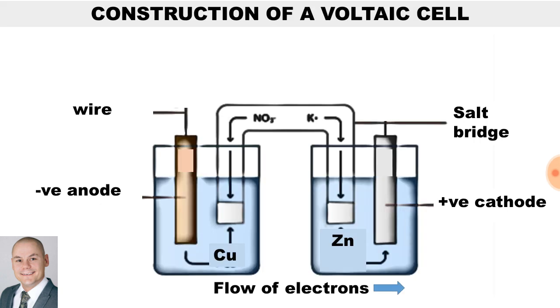Here we have the construction of a voltaic cell. We have the negative anode, which is the copper plate, a positive cathode, which is the zinc plate, and we have flow of electrons from the copper plate to the zinc plate along the salt bridge.